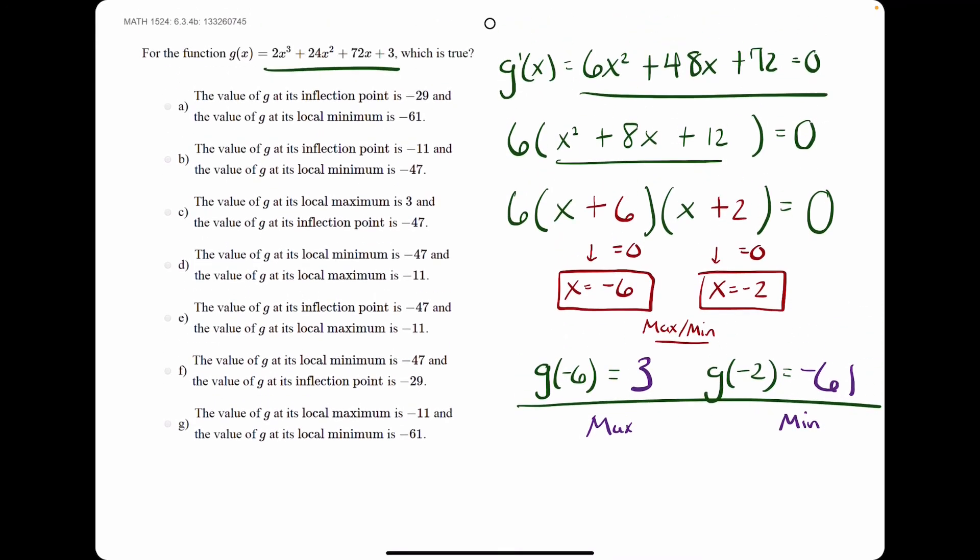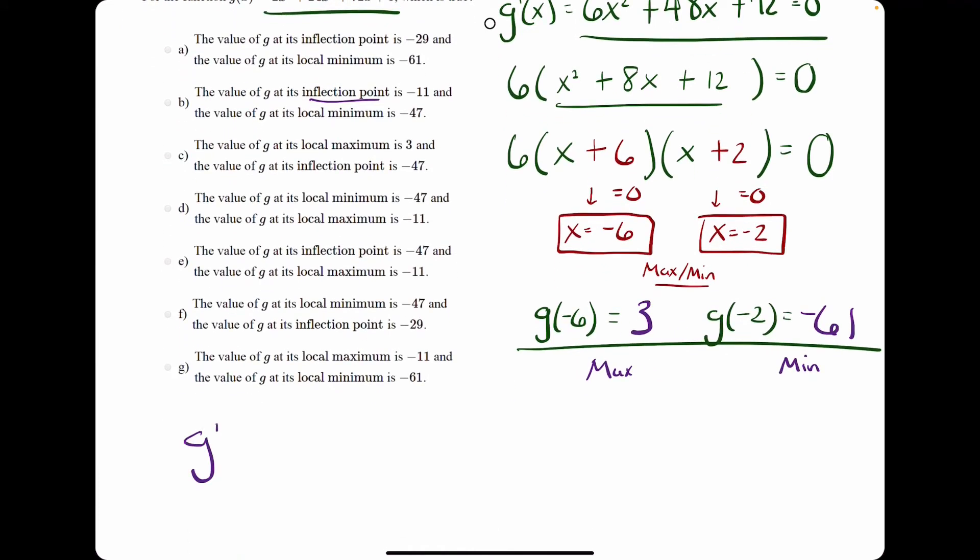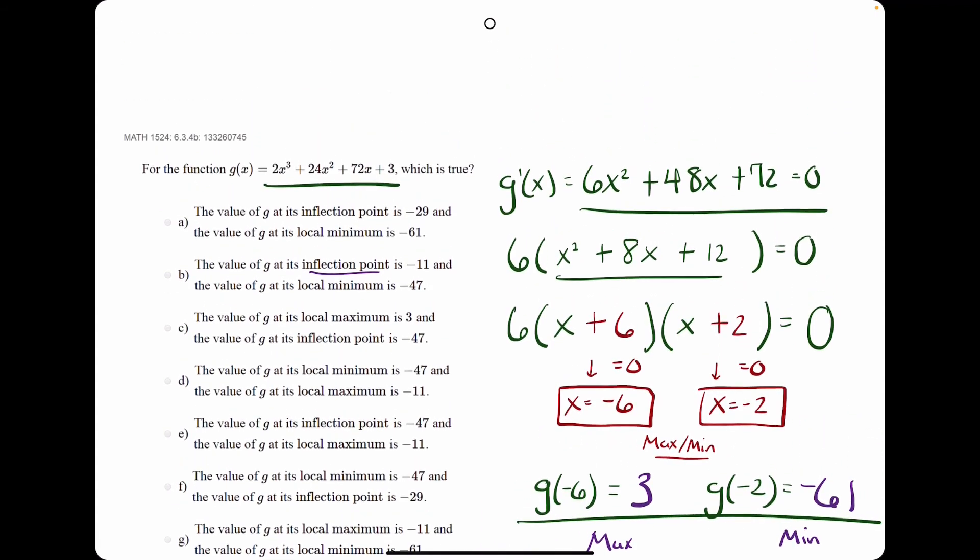How we do that is by finding the second derivative, setting it equal to 0 and solving for x, then plugging that x value into the original function g.